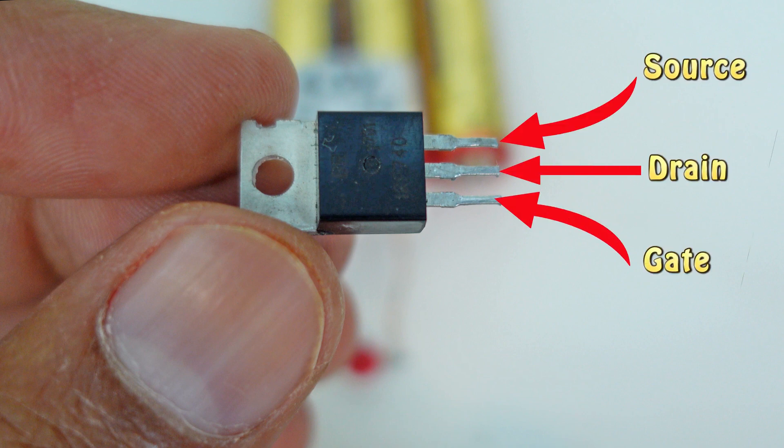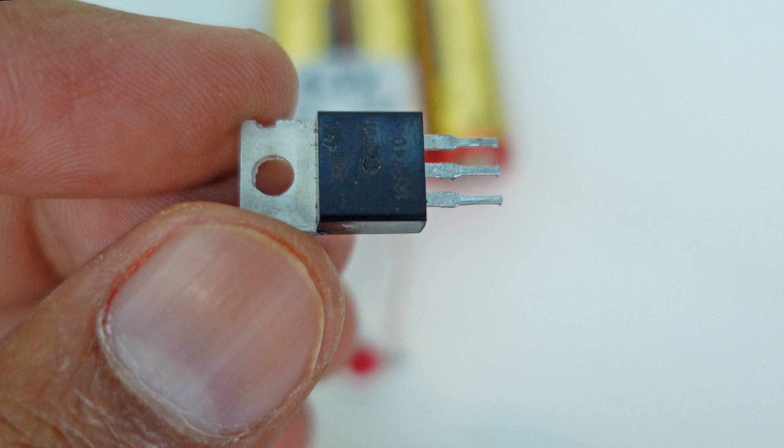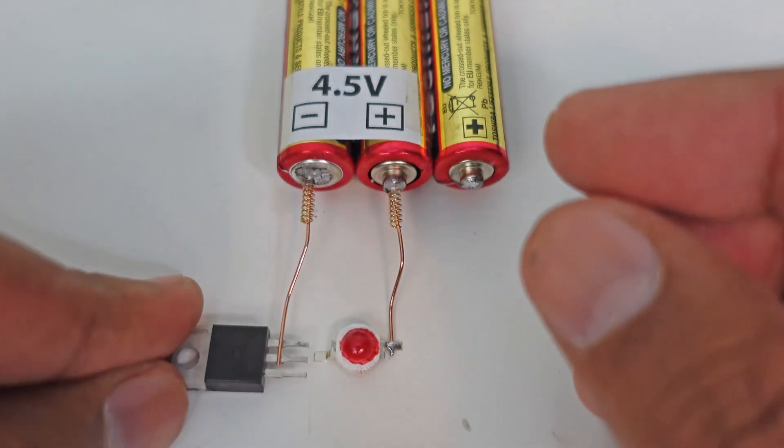The MOSFET receives current from the source. The MOSFET sends current out from the drain. And the gate acts as a switch which controls the flow of current. We will not make things too difficult to understand. Let's take the experiment further.